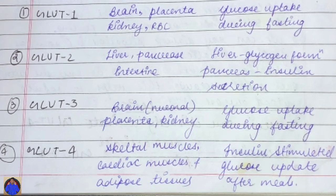GLUT3 is located in the brain, placenta, and kidney, and its function is glucose uptake during fasting. GLUT4 is located in skeletal muscle, cardiac muscle, and adipose tissue. GLUT4 is insulin-dependent — this is frequently asked in exams. Its function is insulin-stimulated glucose uptake after a meal.